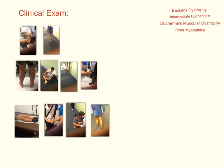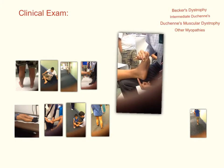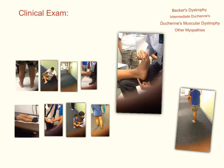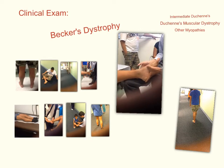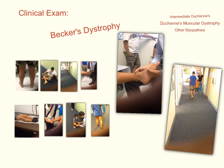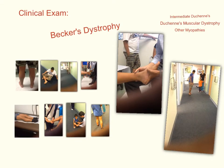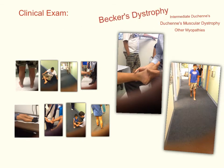Depending on the severity of each symptom, there are a range of diseases that each patient may be diagnosed with. Becker's syndrome is a mild muscular dystrophy disease similar to Duchenne's, in that it involves the mutation of the dystrophin gene. Patients exhibit a mild waddling gait, and they may continue to walk independently beyond the age of 13 years.